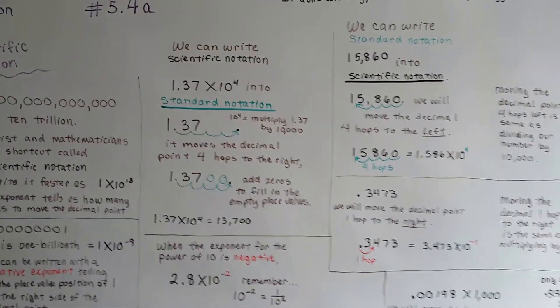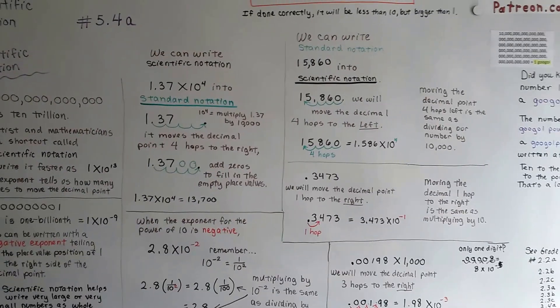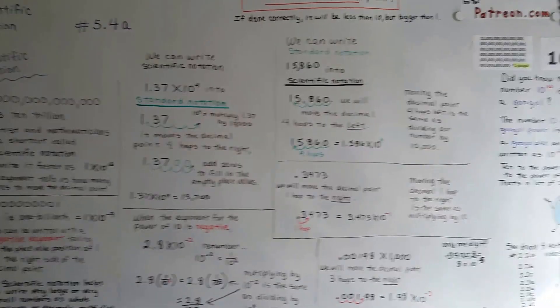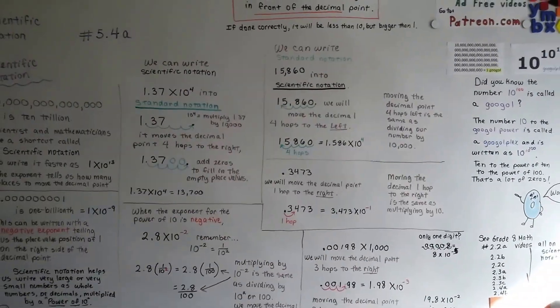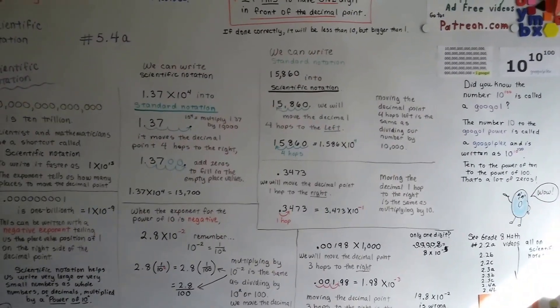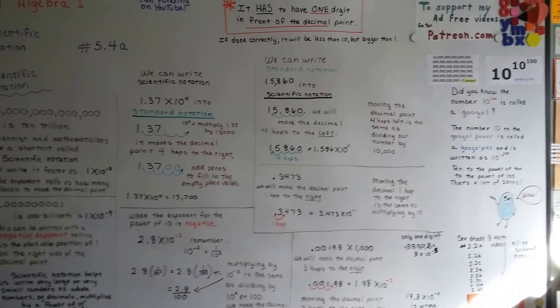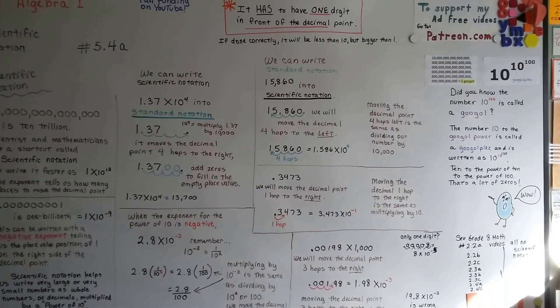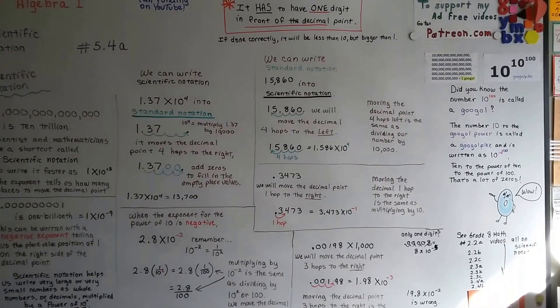The next thing we're going to talk about is multiplying and dividing scientific notation. I'll see you there. I hope this helped. Remember: one digit in front of the decimal point. Bye!